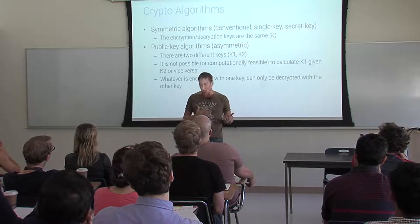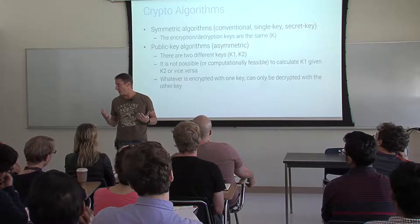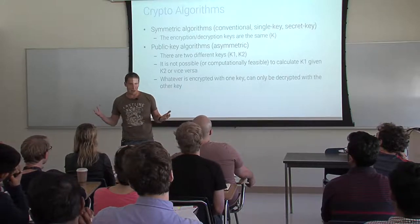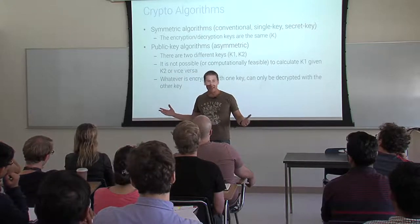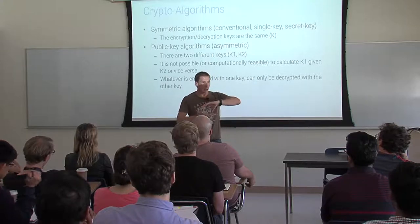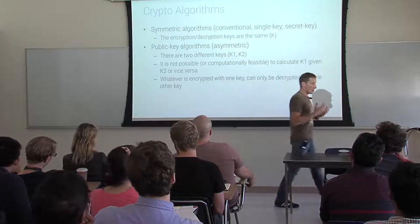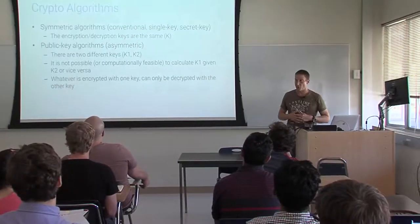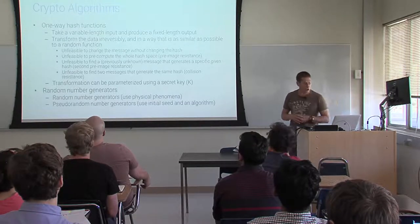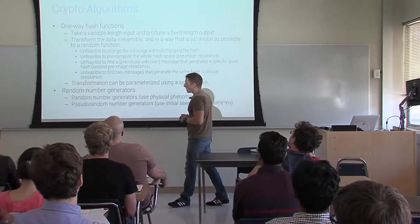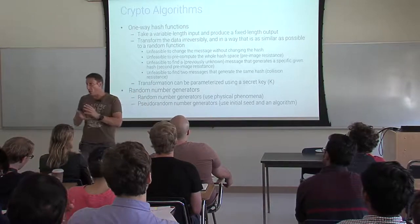Public key cryptography came in the mid-1970s. Before then, the only thing that really existed was secret key cryptography. Imagine: for 4,000 years you have one type of cryptography, and suddenly something completely new came up that changed the way we look at crypto. That's not surprising that the authors of these algorithms have received Turing Awards and been celebrated by the computer science community. There are also other important algorithms, like one-way hash functions.